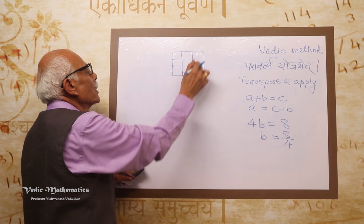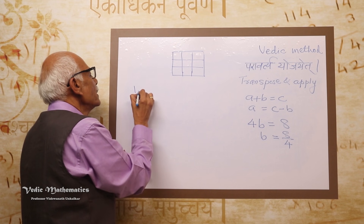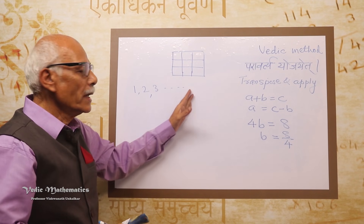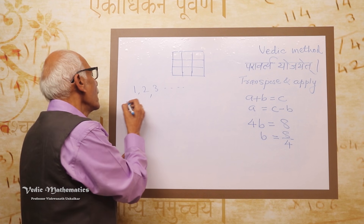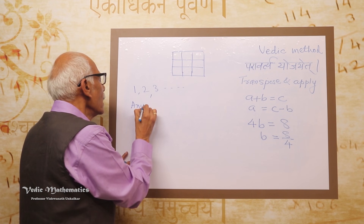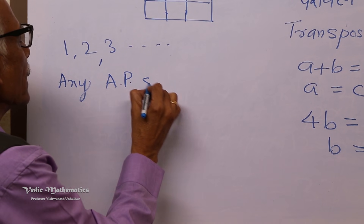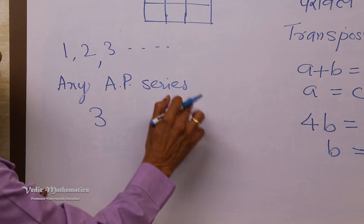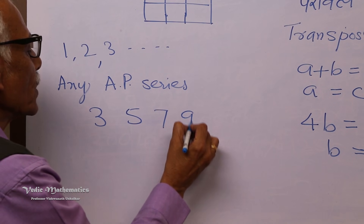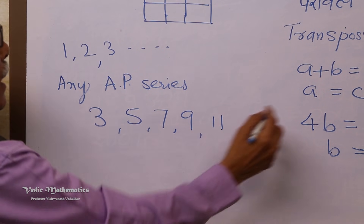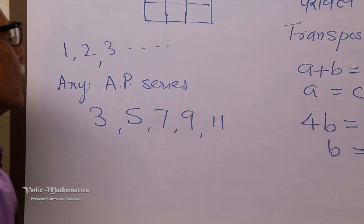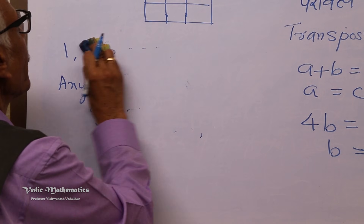If we take continuous numbers from 1 to 9 or any arithmetic progression series — for example, 1 plus 1, 2 plus 1, 3 plus 1 — that is Ekadikena Purvana. Or you can start from any number and maintain a common difference: 3 plus 2 is 5, 5 plus 2 is 7, and so on. The series can have a common difference of 2, 3, 4, or whatever number you want.